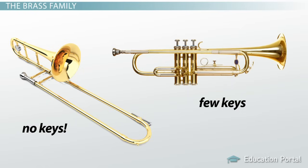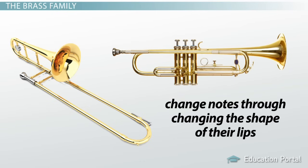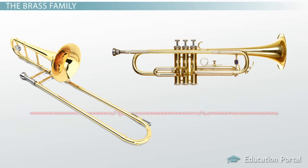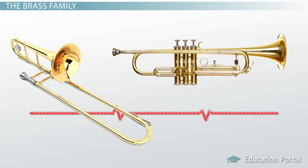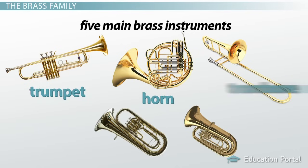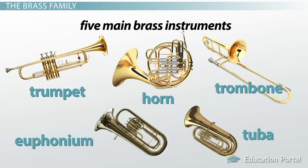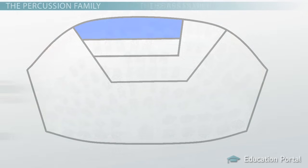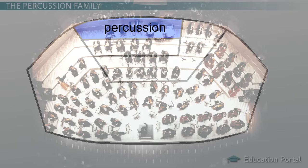Brass players have more than just a few notes available to them. By pressing keys and changing the shape of their lips — tenser lips for higher pitches and looser lips for lower pitches — they can play a wide range of notes. If you've heard "Taps," you've heard a brass player using only their lips to change notes. The five main brass instruments in the orchestra are the trumpet, the horn, the trombone, the euphonium, and the tuba. Trumpets and horns occasionally play the melody, but much of the brass section's job is to play supporting notes.